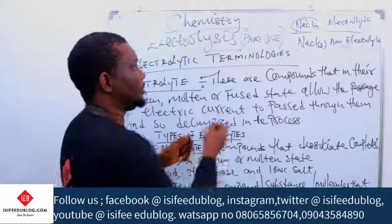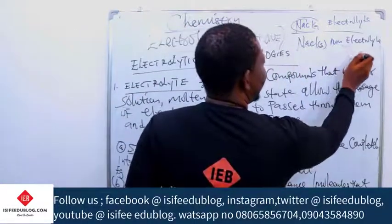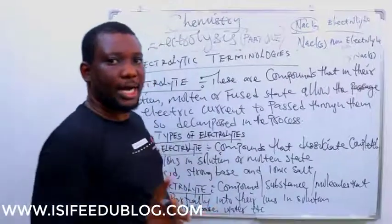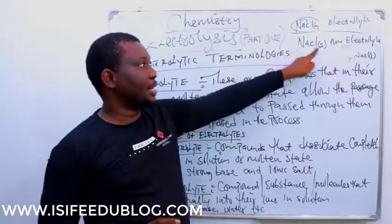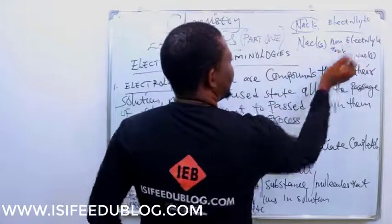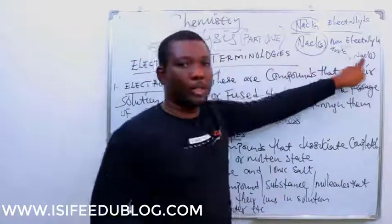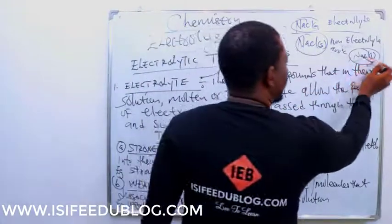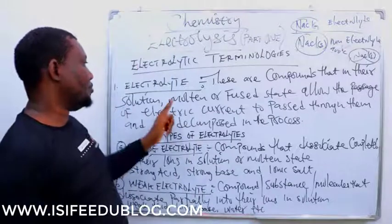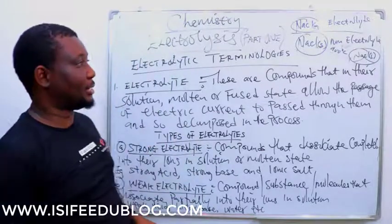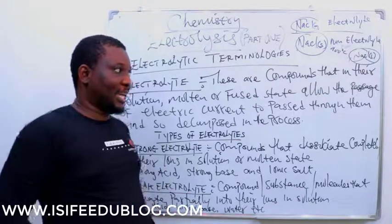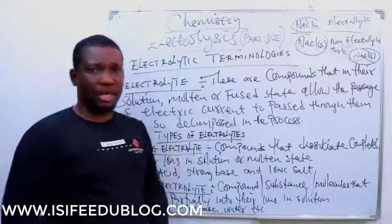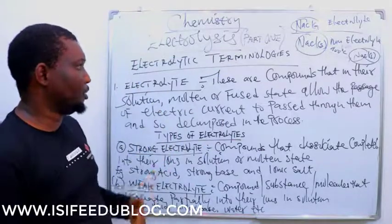When you heat sodium chloride at about 900 degrees Celsius, it melts to give liquid sodium chloride without adding water — it is now in molten form. In the molten state, the ions still break up into sodium and chloride. In that condition, such ions can allow current to flow through them, and in that process there is decomposition. So electrolytes are compounds that in their solution, molten, or fused states can allow passage of currents and decompose.